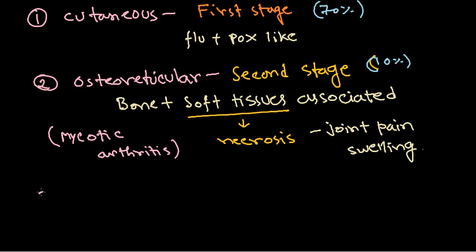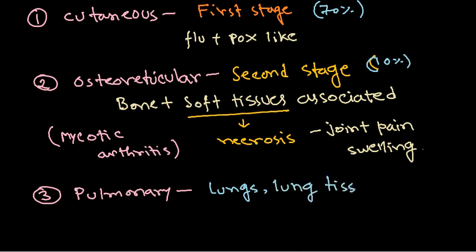The third important type is pulmonary blastomycosis, which is the most common for many mycotic infections. In pulmonary blastomycosis, they attack the lungs and lung tissue, causing difficulty in breathing. Most of the time, symptoms are flu-like and also tuberculosis-like.